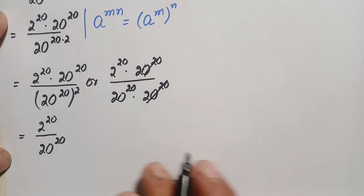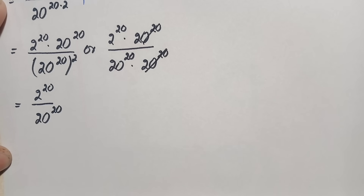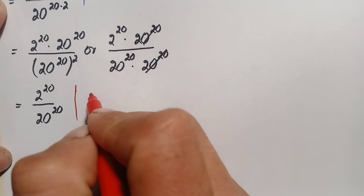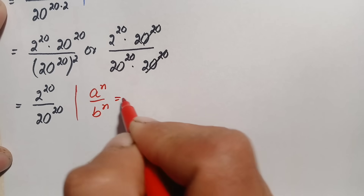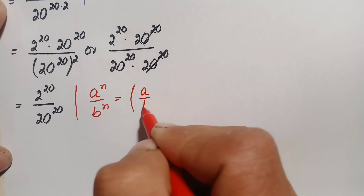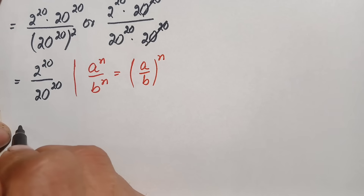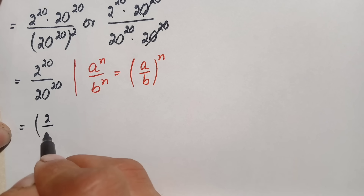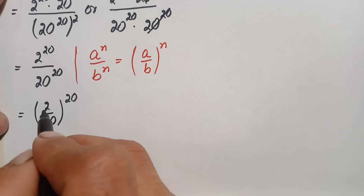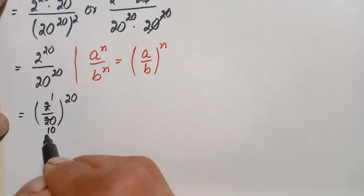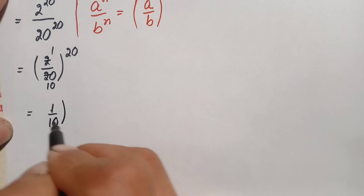Both the numerator and denominator have the same power. We apply the identity a raised to power n divided by b raised to power n equals (a/b) raised to power n. This gives us (2/20) raised to power 20. Simplifying, 2/20 equals 1/10, so we get (1/10) raised to power 20.